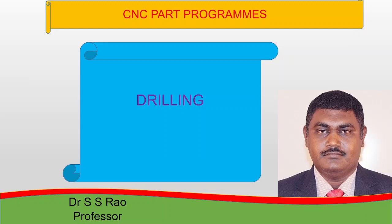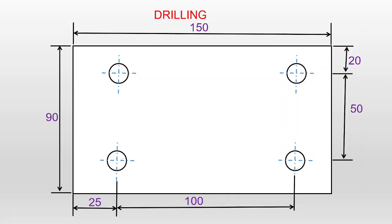In this video, I am going to explain the drilling operation and how to prepare a CNC part program for a simple drilling operation. We will consider a given workpiece with four holes to drill. The overall workpiece dimensions are 90 by 150mm, with each hole at a corner, and all dimensions are given.